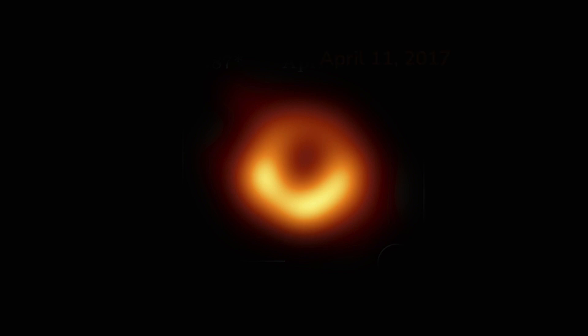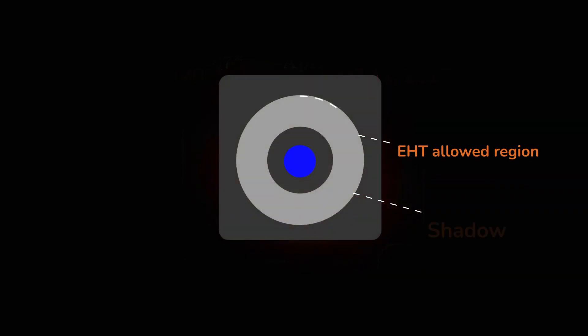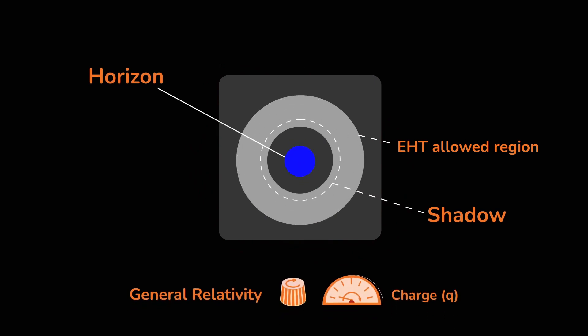The Event Horizon Telescope obtained the first ever image of a supermassive black hole named M87. These measurements set limits on the minimum and maximum size of the shadow of M87. By comparing the shadow sizes predicted for various well-known black holes with these limits, we can set constraints on the charges and exclude some black hole models.